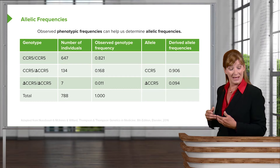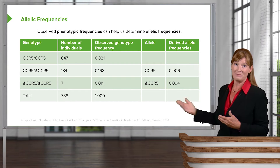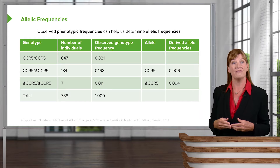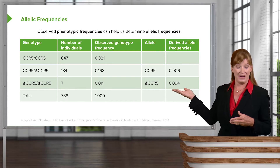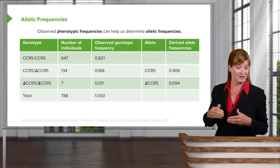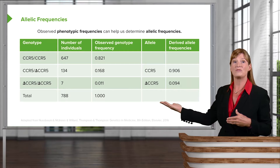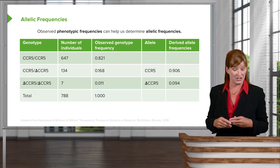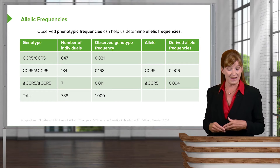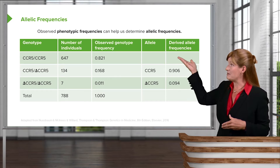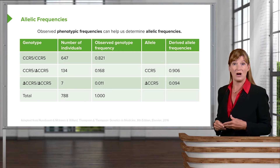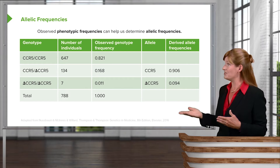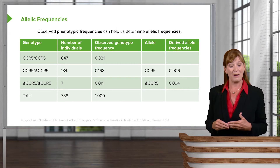In the left column here you can see denoted whether we are homozygous for the CCR5 receptor, whether there is heterozygosity at the CCR5 receptor, and then homozygous for the delta CCR5, which is the one that offers protection or resistance against HIV. We care about the population, so the number of individuals column shows how many individuals have each of those different genotypes in this particular population.